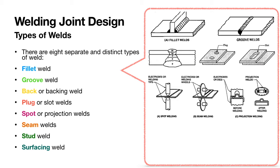Amongst the two main types of weld, fillet welds are those that are placed in a corner formed by two mating work pieces, whereas, as the name implies, groove welds are those that are placed in the grooves.